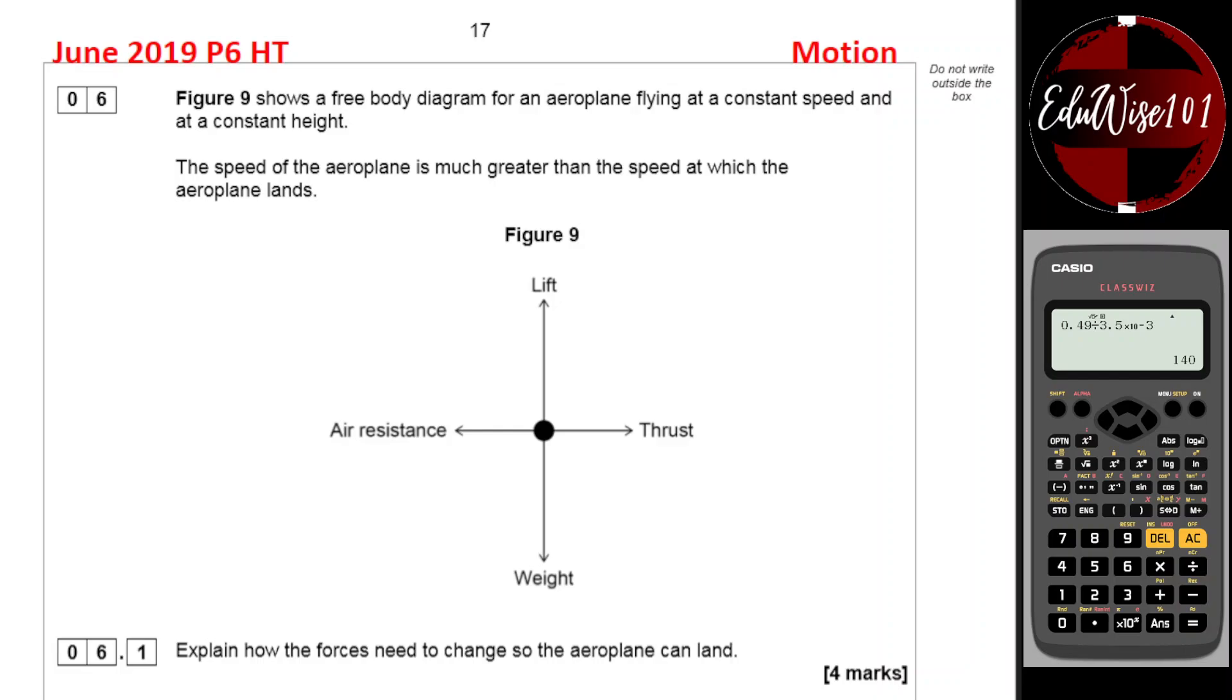The speed of the airplane is much greater, that means it obviously needs to slow down. So explain how the forces need to change so the airplane can land. For it to land, it needs to reduce the lift. Weight you can't change in the airplane, so you can reduce the lift, which means the resultant force will be downwards, so the airplane can actually be moving down.